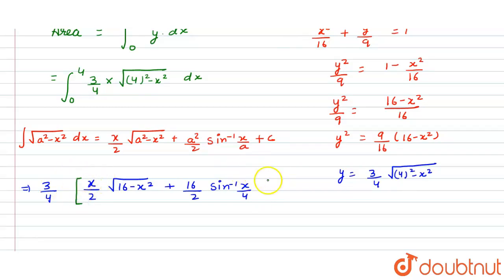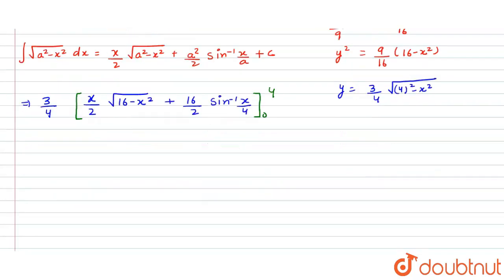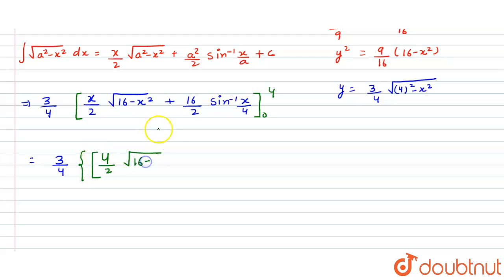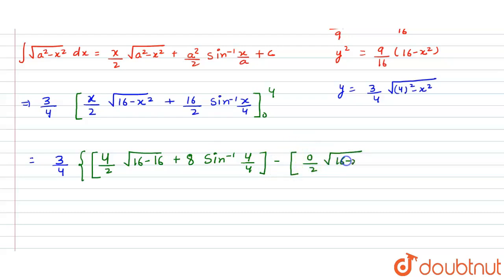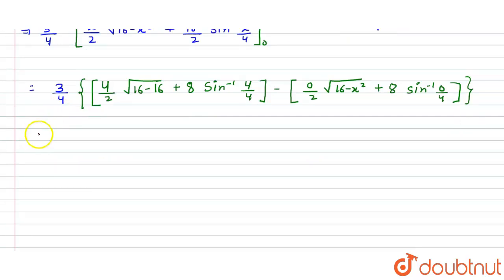Now we substitute the limits. Putting in the upper limit x = 4: we get (3/4) times [(4/2)√(16 − 16) + 8 sin⁻¹(4/4)]. Since 16 − 16 = 0, the first term vanishes. For the lower limit x = 0: we get (0/2)√(16 − 0) + 8 sin⁻¹(0/4), which gives 0.